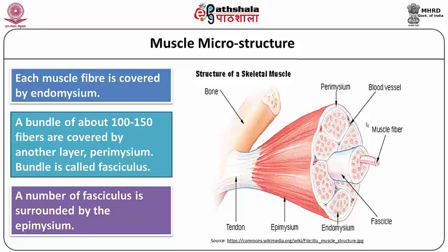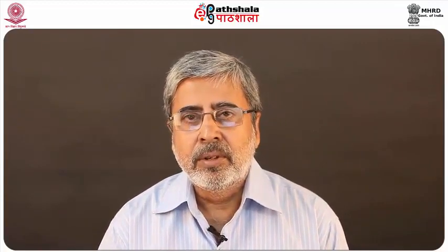Now let us come to the microstructure of muscles. You can see in this picture a muscle originating from a bone through a tendon, cut in between. There are surrounded structures which can be called fasces or fascicles. The outer side of the muscle is covered by epimysium; each muscle bundle is covered by perimysium; and each single muscle fiber is covered by endomysium. So single muscle fibers are covered by endomysium, muscle bundles are covered by perimysium, and a number of bundles are covered by epimysium. Each bundle may contain one type of muscle fiber or sometimes it may be mixed.